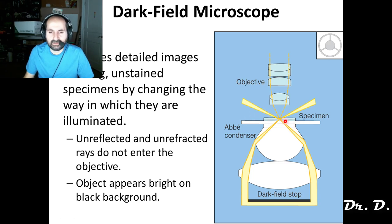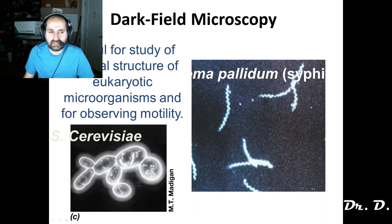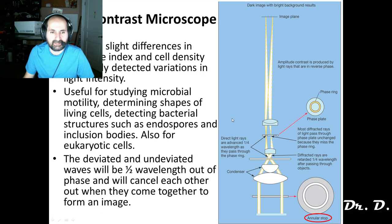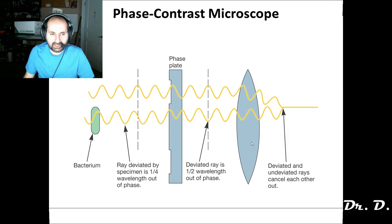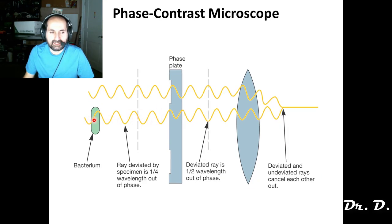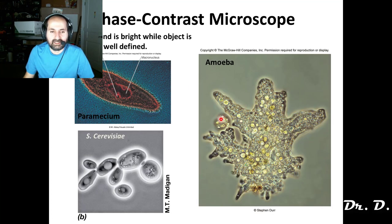In dark field microscopy, all of the light escapes the objective except the light that strikes a sample — that light gets refracted into the objective, so the samples appear bright, which increases contrast. Phase contrast increases contrast by putting the light that hits the sample out of phase — those opposite wavelengths cancel each other out, the specimen looks darker, so it's like an artificial way of staining without staining.